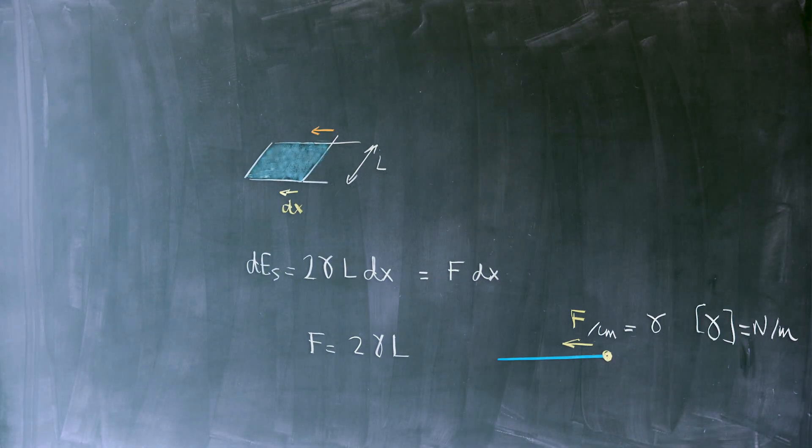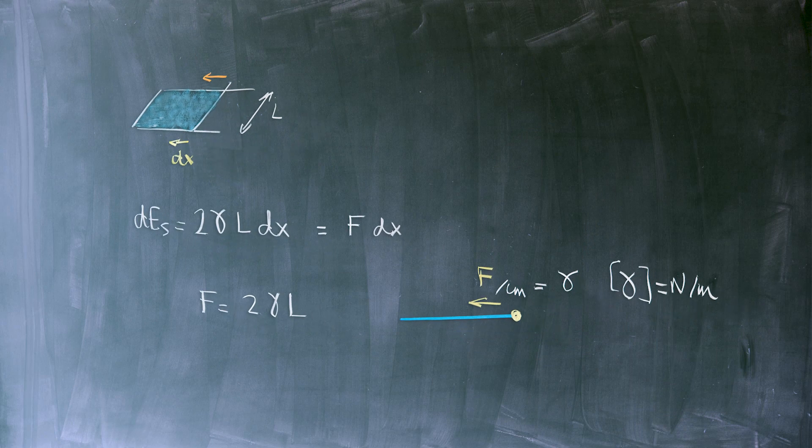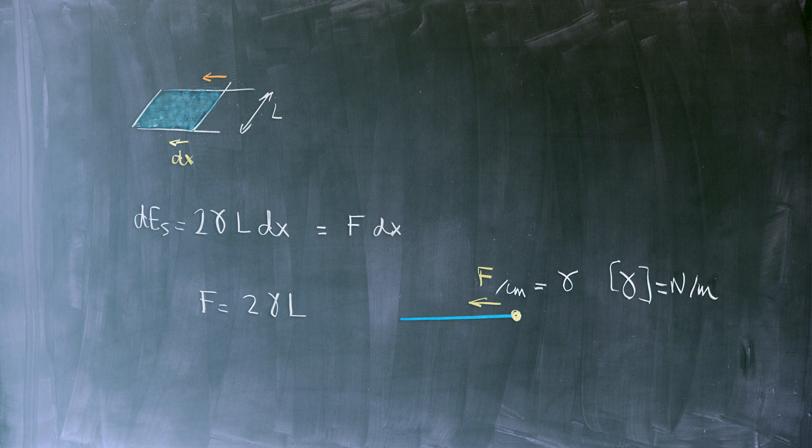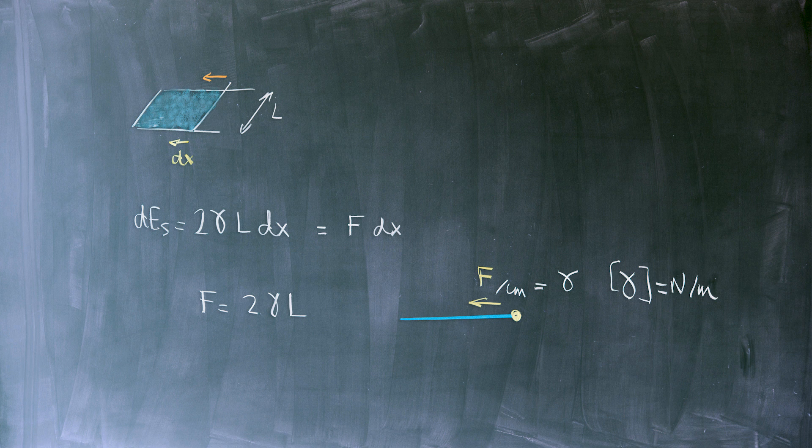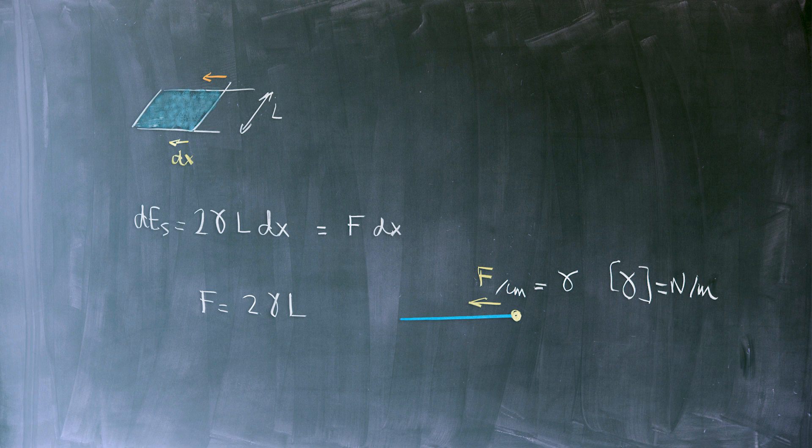The distance to be considered is the distance perpendicular to the blackboard. When we have to solve a problem where we have interfaces, we can either use energy arguments or force arguments, and it turns out that very often it's easier to treat these problems with energy arguments.